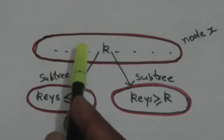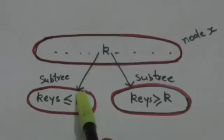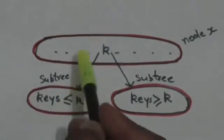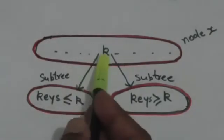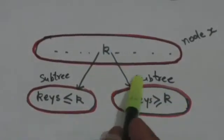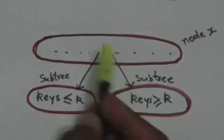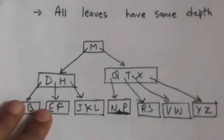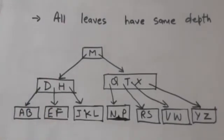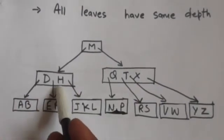For any key K of any internal node X of a B tree, the subtree at the left of key K will contain keys whose values are less than or equal to the value of key K, and the subtree at the right of key K will contain keys whose values are greater than or equal to the value of key K. In a B tree, all leaves have the same depth.